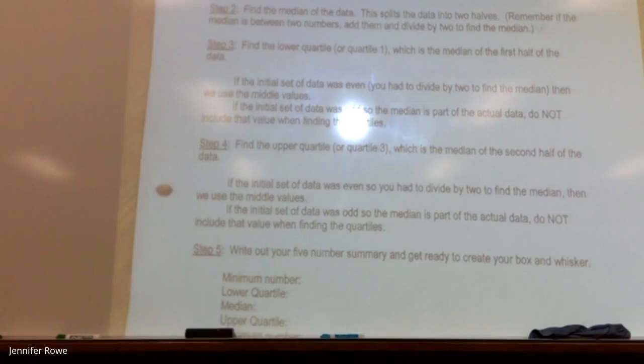So you're just finding median again, just for the first half of data. So you're basically finding median three times. Once for the whole set, once for the first half, and once for the second half. But why? Because that's how box and whisker plots divide up the data.